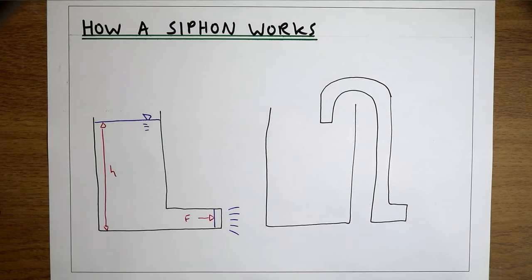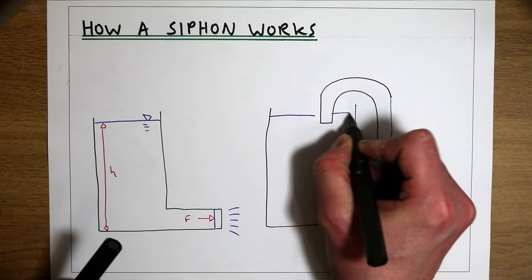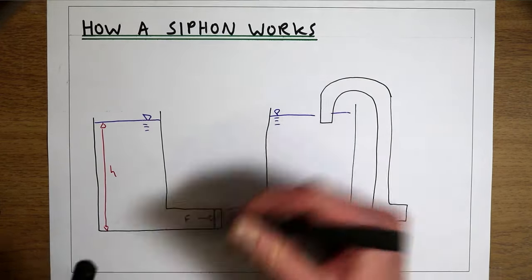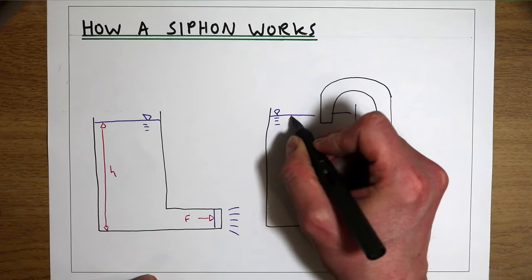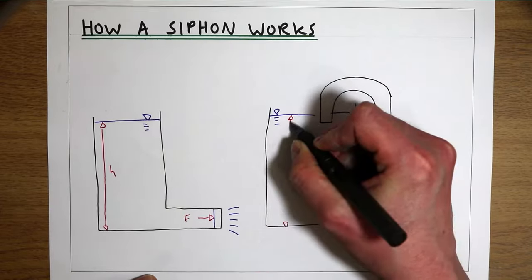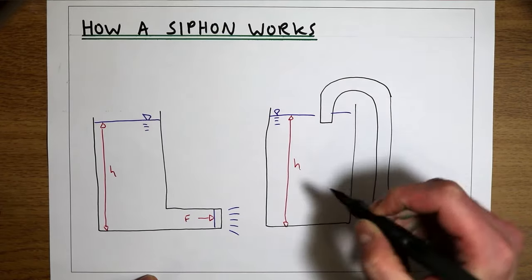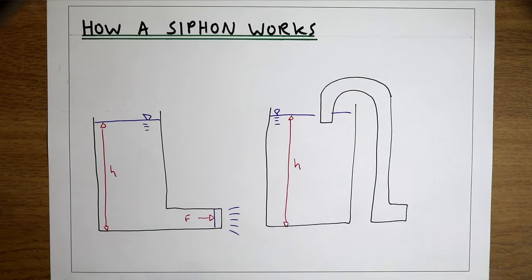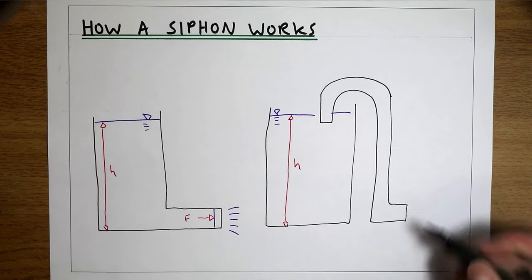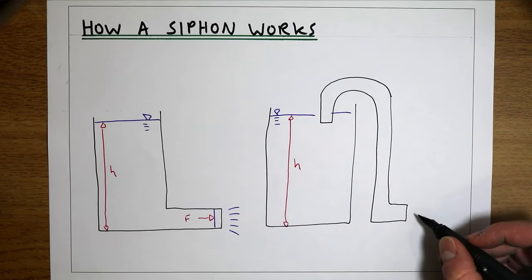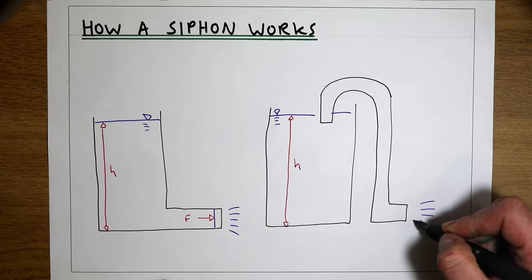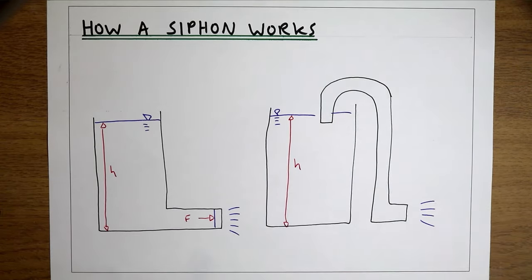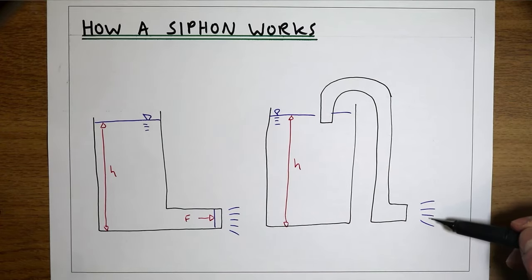What's going on here is actually very similar to the previous example. We have the same height of water H, the same pressure in the tank, and we're also discharging to atmosphere at the same level. So physically, the difference in pressure between this point in the system and the tank is going to be exactly the same — so we would expect the flow out of this pipe to be the same.